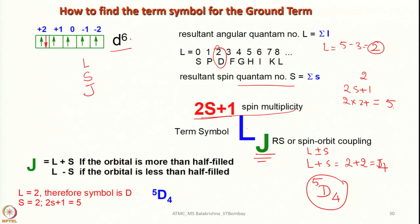Use this formula and try to write ground term symbols for all electronic configurations from D0 to D10, and also P1 to P6, to make yourself familiar so that you will not make any mistake. Let me stop here and continue further discussion in my next lecture. Until then, have an excellent time reading inorganic chemistry, and thank you for your kind attention.